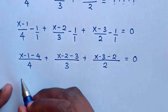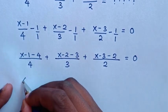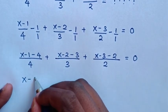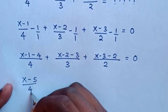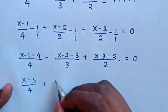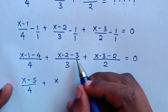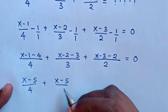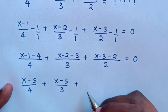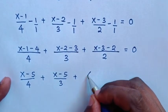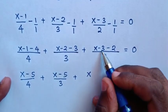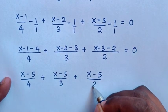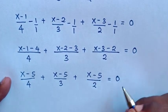Next, in our equation, from the first part it will be x, and 1 minus 4 is minus 5, so we get x minus 5 over 4. Plus, in the second part, it will be x, and minus 2 minus 3 is minus 5, giving x minus 5 over 3. Then plus, in the third part, x and minus 3 minus 2 is minus 5, giving x minus 5 over 2, is equal to 0.